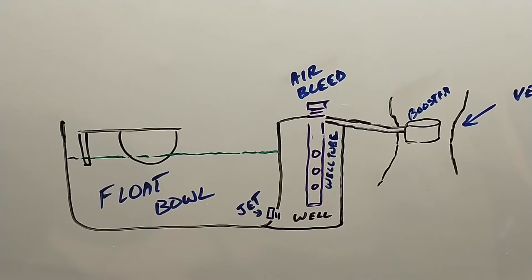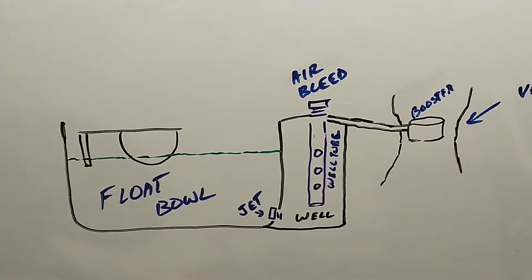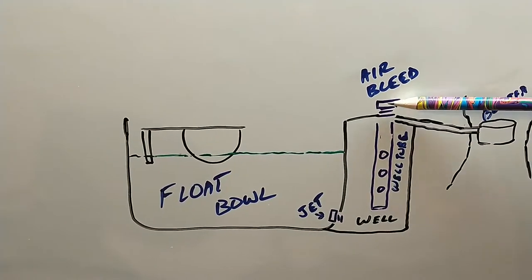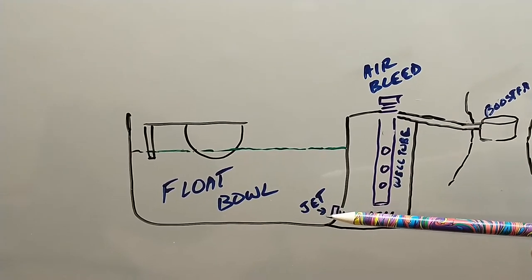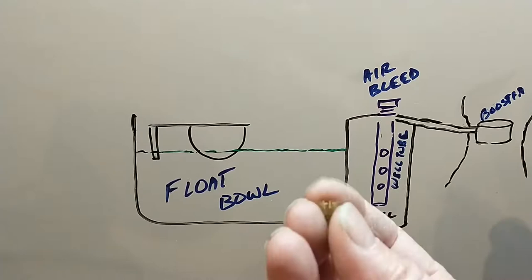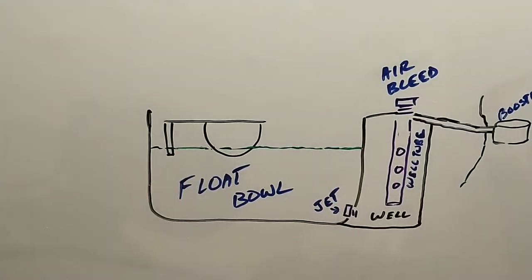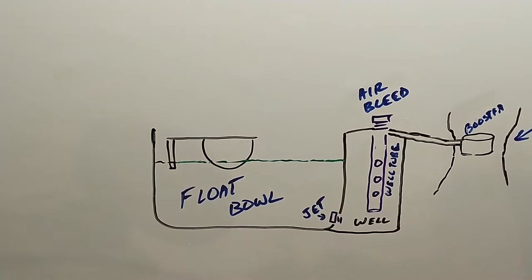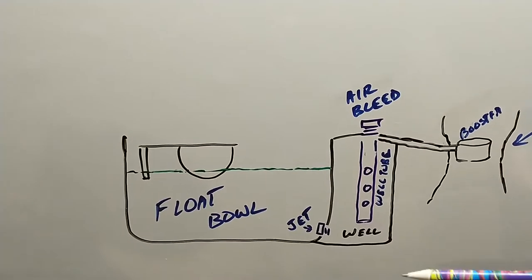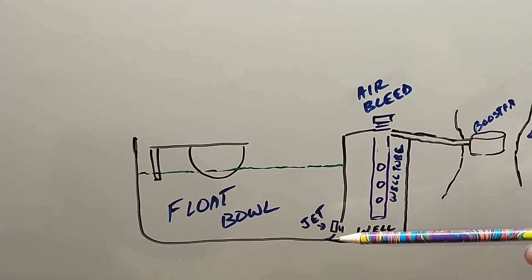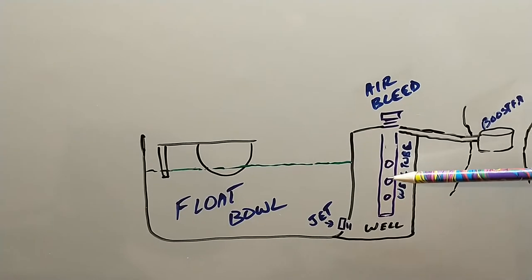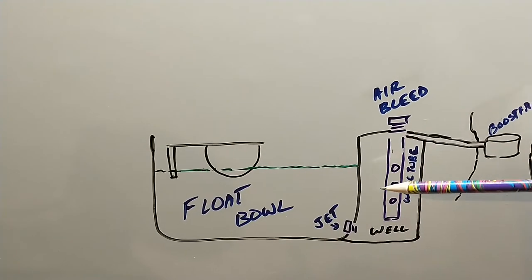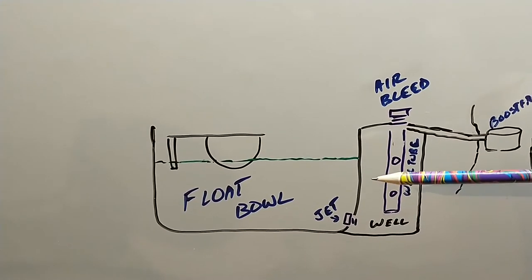So this is what a lot of people don't understand. When you start changing air bleeds in a carburetor, it completely changes its relationship with the way the well tube works. Same thing with jet size. If you go from a number 63 Holley jet to a number 73 Holley jet, you're allowing much more fuel in, which makes it richer of course. But you're also upsetting the balance between the air bleed and the jet. Now the jet is supplying more fuel, so the fuel level might not drop as rapidly or as quickly and you might have an overly rich condition at higher engine speed.